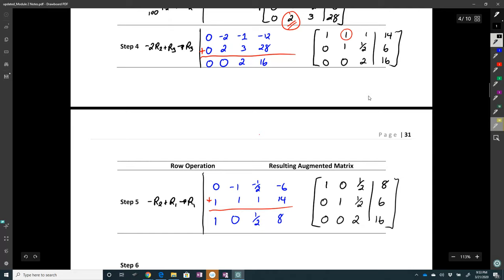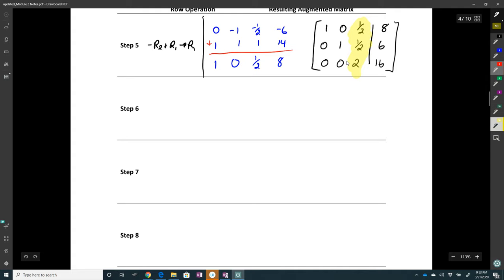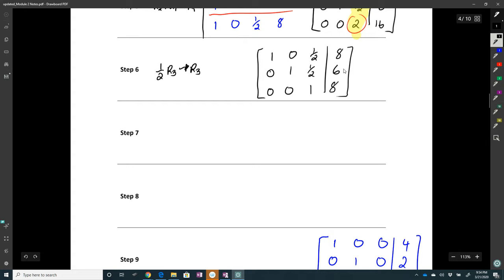These are the last three steps. We deal with the diagonal element first. So I want to turn that into a one. So one half row three becomes my new row three. I can do that mentally.